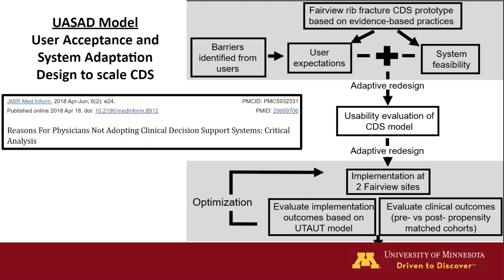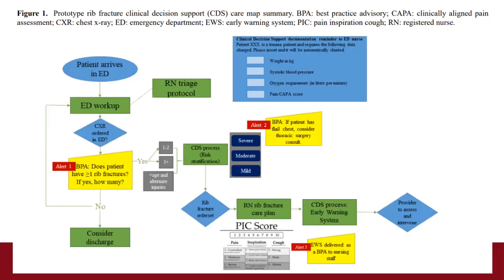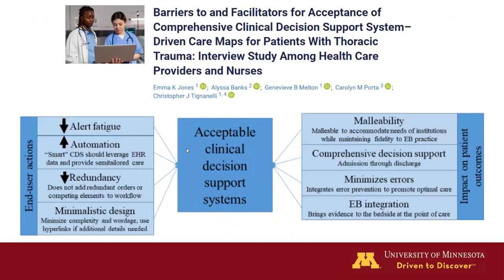We do a combination of expert-driven heuristic evaluations and end-user evaluations with simulated patients — this identifies the most usability issues. We adaptively redesigned, then implemented at one site, four months later two more sites, then the entire system. The prototype had a very linear if-then-else structure. Qualitative interviews revealed eight themes that changed the final system significantly. Providers did not like alert fatigue — pop-ups interrupting their workflow — so we drastically reduced those. Providers wanted high automation, reduced redundancy, minimalistic design, malleability to institutional resources, and comprehensive tracking up to 30 days post-discharge.